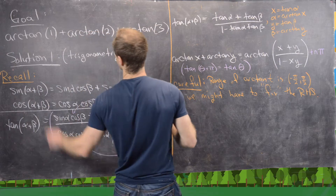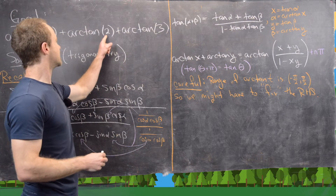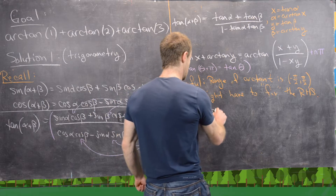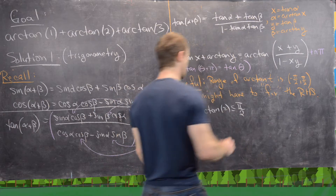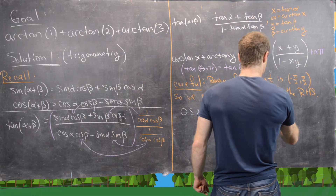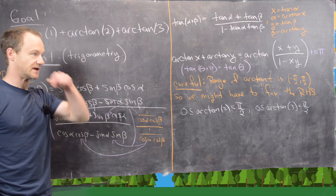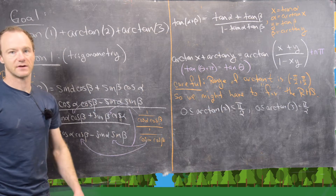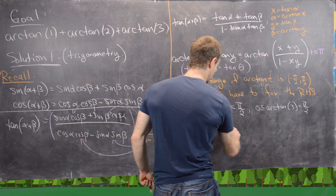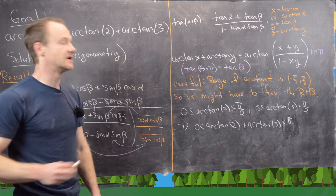Since the inputs are positive, the outputs must also be positive, so arctan of 2 is between 0 and pi over 2 (not equal to pi over 2), and arctan of 3 is also between 0 and pi over 2. That tells us that arctan of 2 plus arctan of 3 is going to be positive but less than pi.